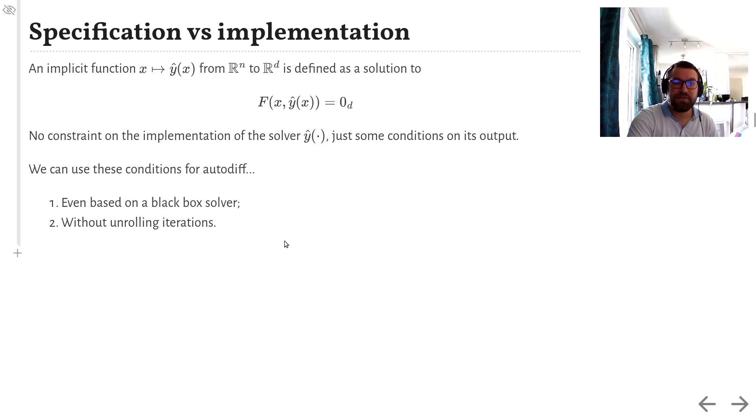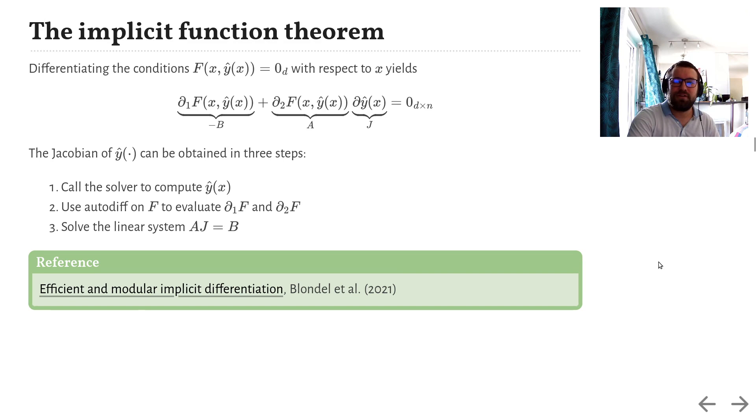So how do we do that? What is this dark magic? The implicit function theorem. If you take the conditions f of x and y of x equals 0, and you differentiate them with respect to x, what you end up with is a linear system of equations. And right here is the part you are interested in, the Jacobian of y with respect to x, which we can obtain in three simple steps.